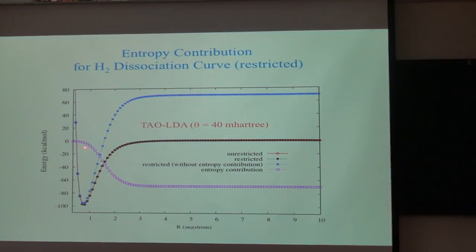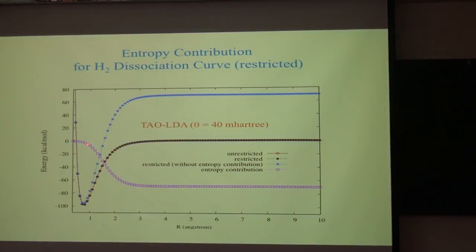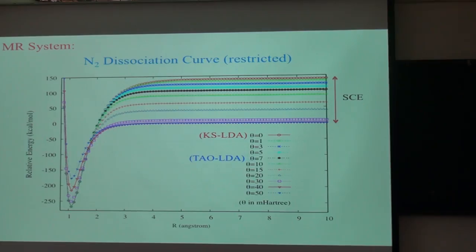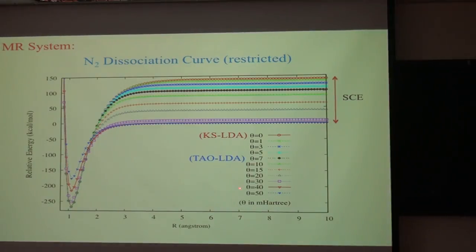The entropy contribution represents strong static correlation. It is small near equilibrium separation and gets more and more important, reaching a constant at the dissociation limit. Similarly, for N2 dissociation, tau LDA with temperature between 30 and 50 milli-Hartree can dissociate N2 properly.